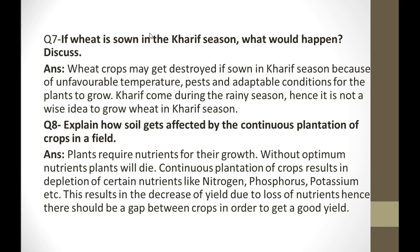Plants require nutrients for their growth. Without proper nutrients, plants will die. Continuous plantation of crops results in the depletion of certain nutrients like nitrogen, phosphorus, and potassium. This results in a decrease in yield due to loss of nutrients. Where you might grow 10 crops, only 1 or 2 will grow properly because there are no proper nutrients available. Hence there should be a gap between crops in order to get a good yield.